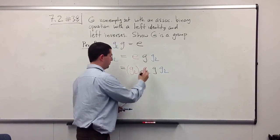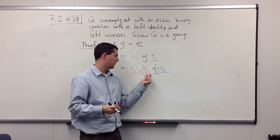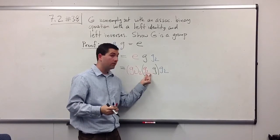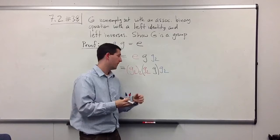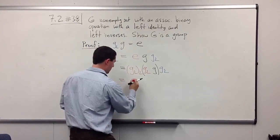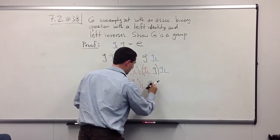But again, I can play the associativity trick. And in the middle, I have g with its left inverse on the left, where it should be, which is going to be the identity, so it's going to go away. And so I'm going to be left with g_ll times g_l.